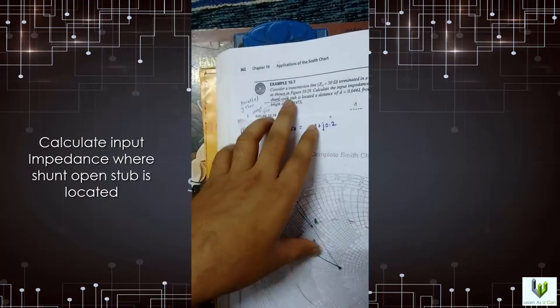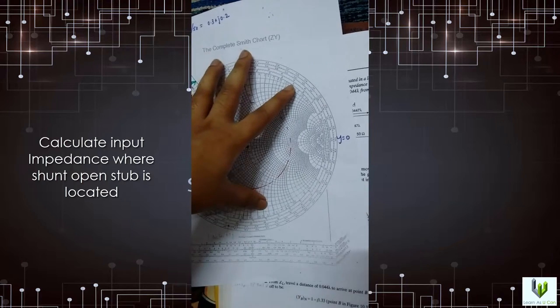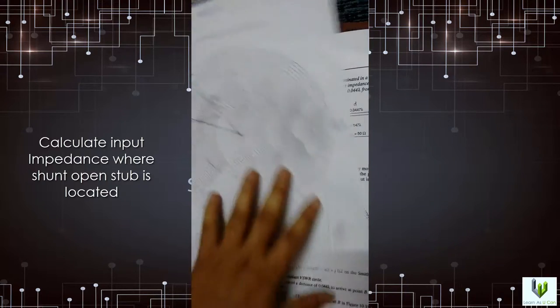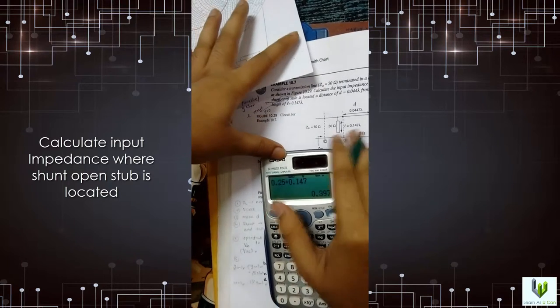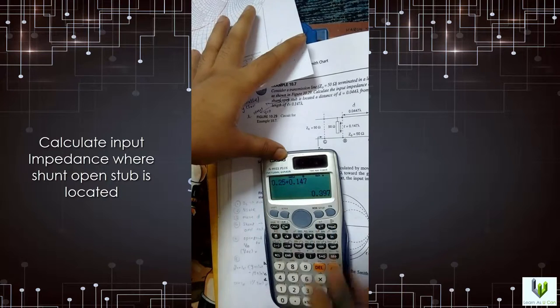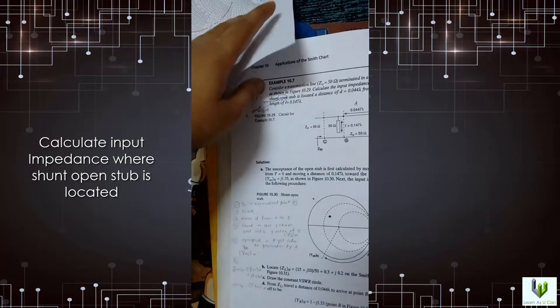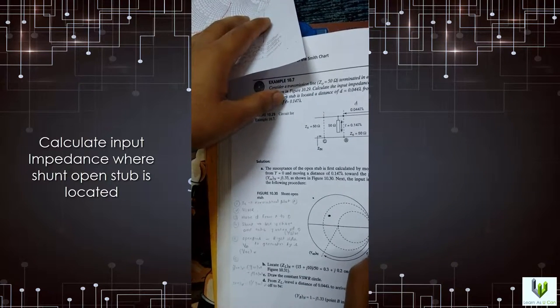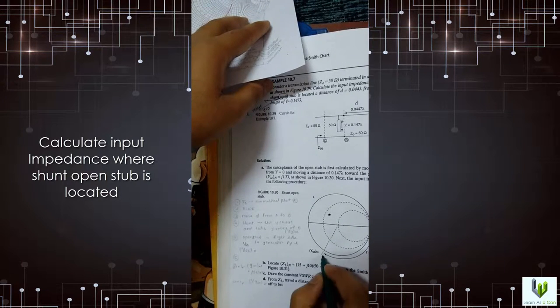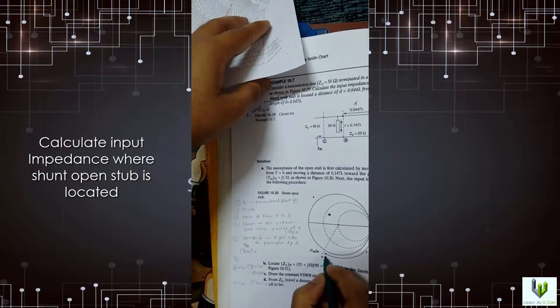We have to plot this distance. The stub is open, so start from Y is equal to 0. And length of the stub is around 0.147. So just 0.25 plus 0.147 is 0.397. So we have to move from 0.25. If the reading is 0.25 and here is 0.397.